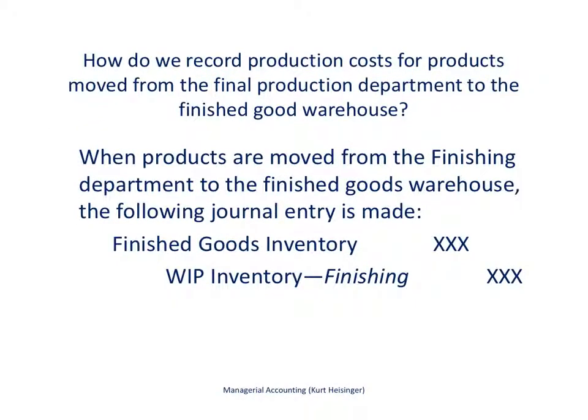As soon as the products are completed, we have to move the product costs — direct materials, direct labor, and manufacturing overhead — that are in work in process inventory for those completed products over into finished goods inventory. We add those costs to finished goods inventory and remove them from work in process inventory. Here we are looking at the finishing department, since that is the last department working on the desks, and as they are completed, those costs get moved over into finished goods inventory.